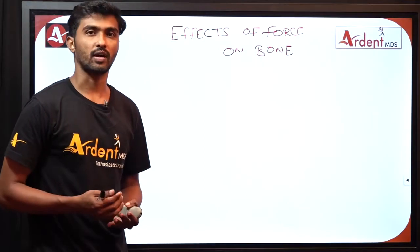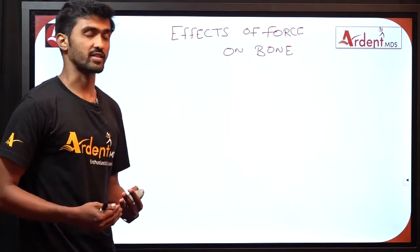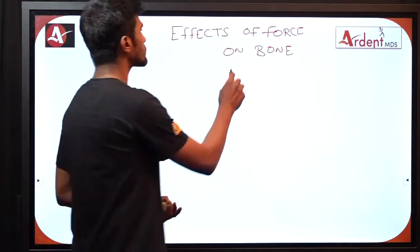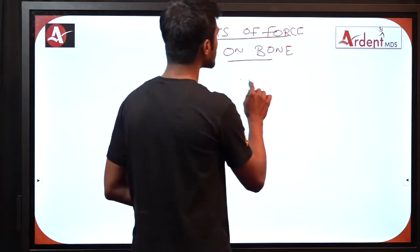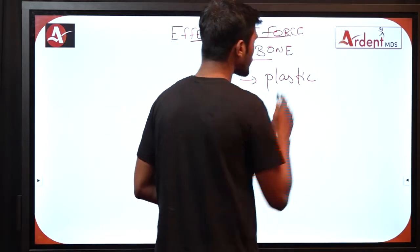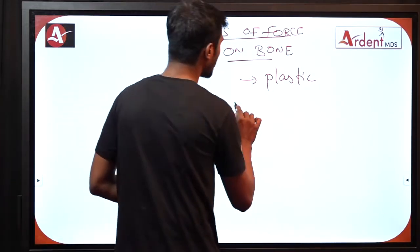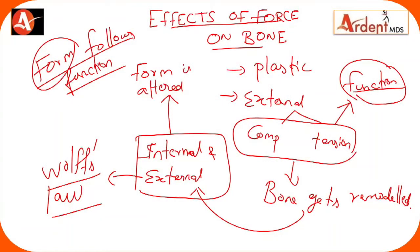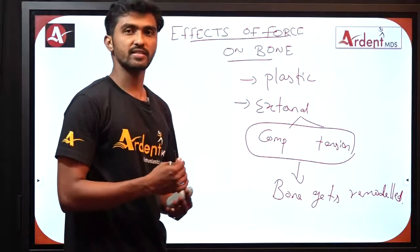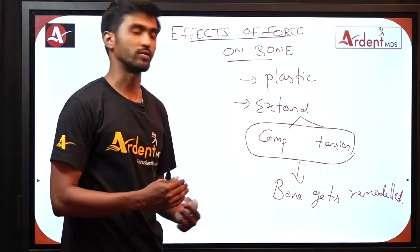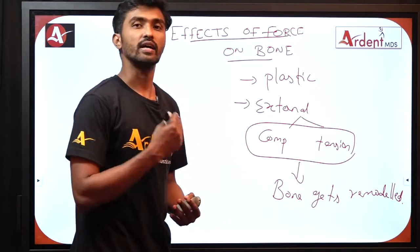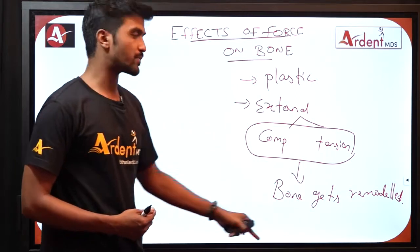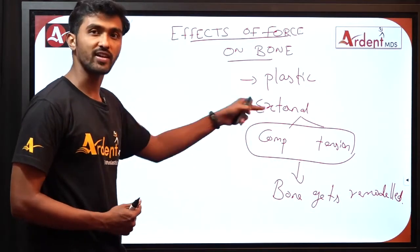Before going to the working philosophy of twin block appliances, let us understand some basics of bone physiology. What are the effects of force on bone? Unlike other kinetic tissues, bones are plastic in nature. What do we mean by plasticity of bone? When we apply external force, which can be either compressive or tension force, the bone gets remodeled. Remodeling means in some places there may be deposition of bone and in some places there may be resorption of bone. Simultaneous deposition and resorption is called remodeling of the bone, and this remodeling takes place according to the load or force or function placed upon the bone.